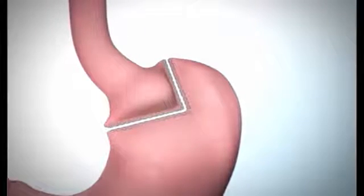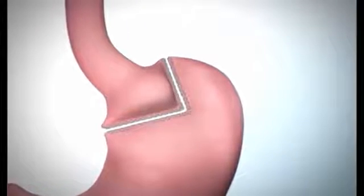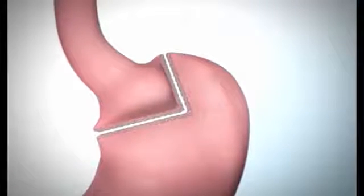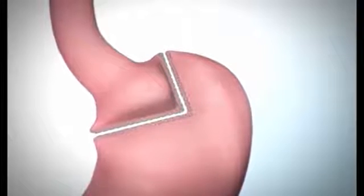The smaller upper section of the stomach that is connected to the esophagus is your new stomach, also known as the gastric pouch. This gastric pouch will hold about two ounces of food.